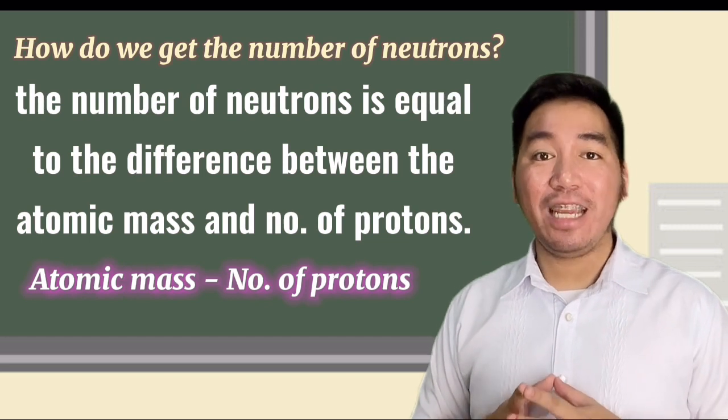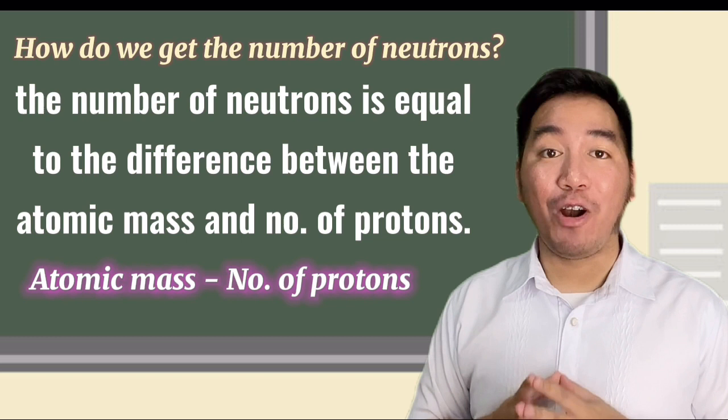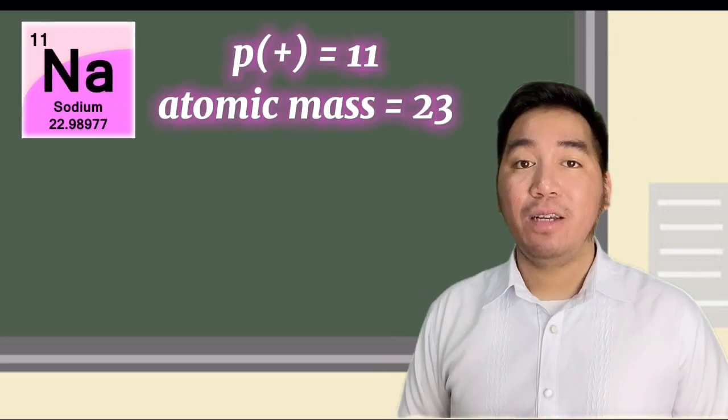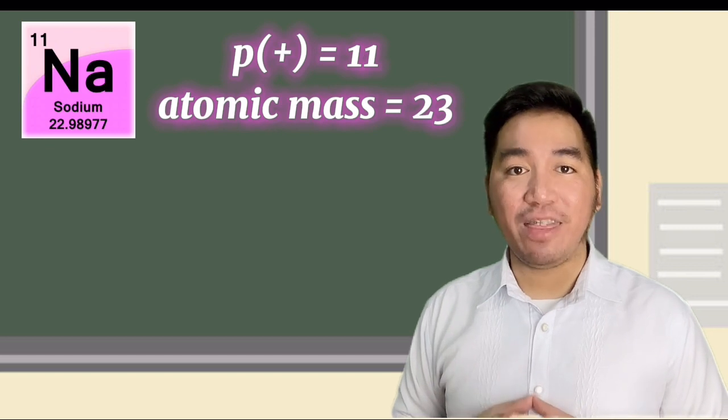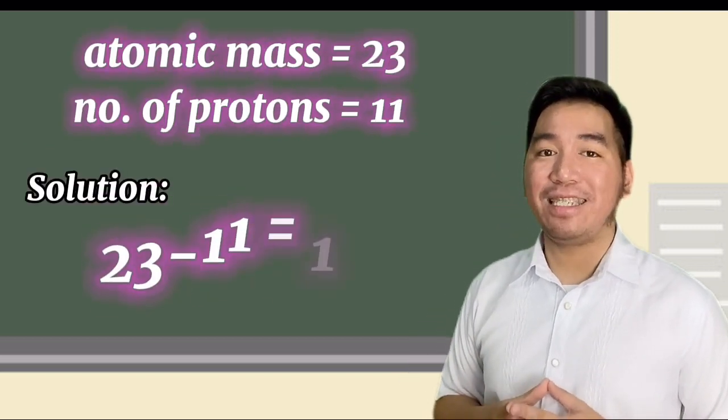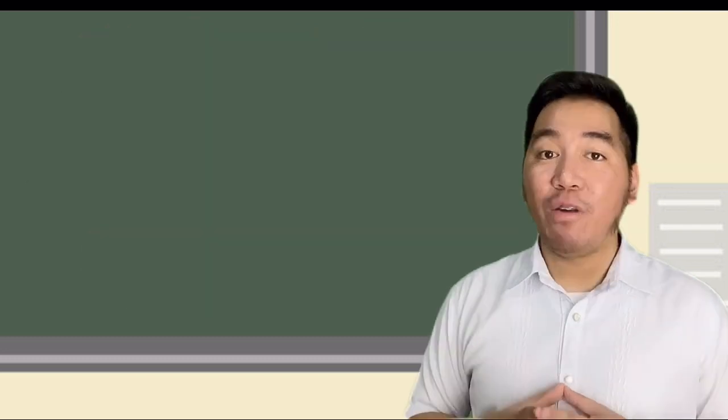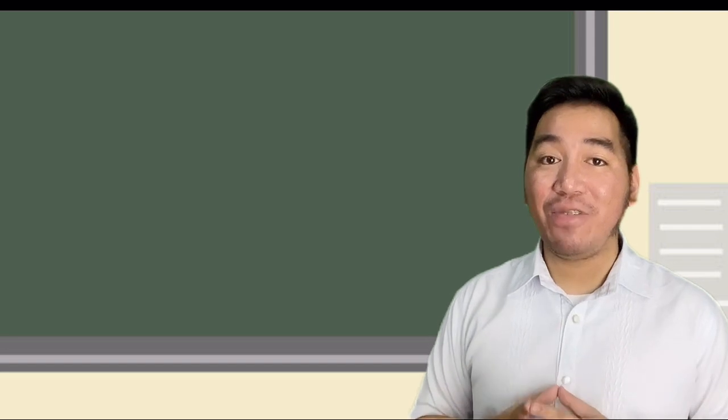But how about the number of neutrons? The number of neutrons is equal to the difference between the mass number and the number of protons. In our example, sodium has 11 protons and atomic mass of 23. The difference between the two numbers is 12. To avoid confusion,